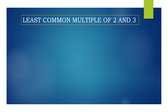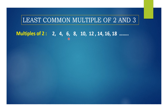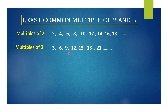Now let us find the least common multiple of 2 and 3. Before finding the LCM, we have to find the multiples of both. Multiples of 2 are: 2, 4, 6, 8, 10, 12, 14, 16, 18 and so on. Multiples of 3 are: 3, 6, 9, 12, 15, 18, 21 and so on. Now we will find the common multiples — the numbers which appear in both lists.